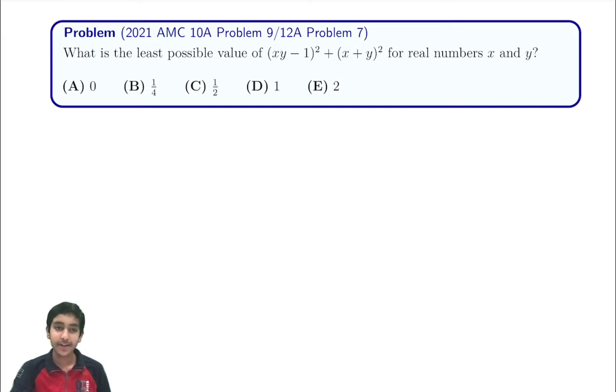Hi everyone! In this video, I'll show you the solution to the 2021 AMC 10A Problem 9/12A Problem 7. What's the least possible value of this expression here? (xy - 1)² + (x + y)².